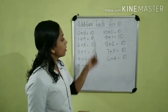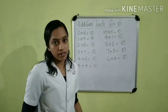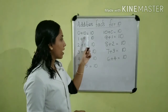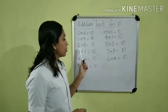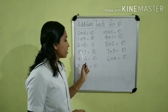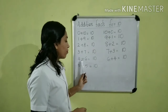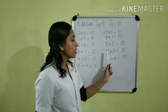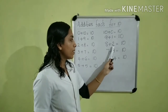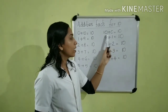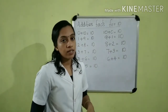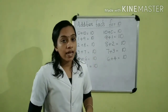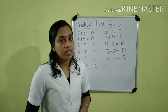So now we get these addition facts. I will read the addition facts once again: 0 plus 10, 1 plus 9, 2 plus 8, 3 plus 7, 4 plus 6, 5 plus 5, 6 plus 4, 7 plus 3, 8 plus 2, 9 plus 1, 10 plus 0. So, if we add these pairs, we will get only one answer. That is, 10.